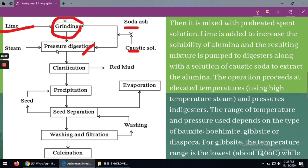The operation proceeds at high temperature using the pressure digesters. The range of temperature that is used here depends on the type of bauxite, either gibbsite, bohemite, or diaspore. For gibbsite, we use the lowest temperature, which is about 140 degrees Celsius, while for bohemite the highest temperature is used, which is about 300 degrees Celsius.